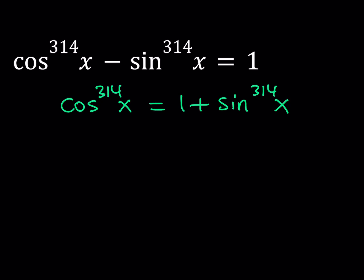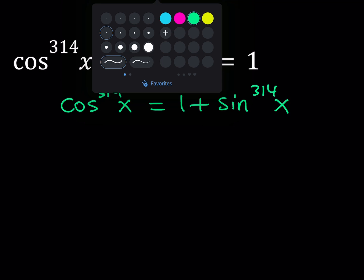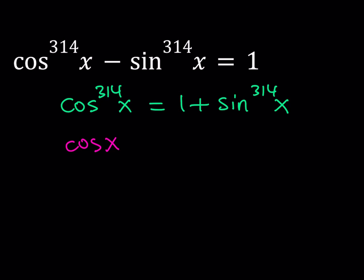All right, so now what do we know about the values of cosine and sine? Well, we do know that cosine and sine are actually restricted. They can only take values between negative 1 and 1 inclusive. All right, so that's a closed interval. But we have the powers here, so that makes a difference, obviously. Cosine of x is always between negative 1 and 1. And the same thing is true for sine x.